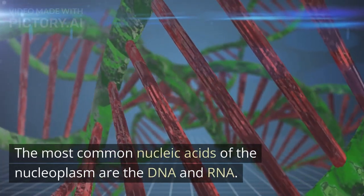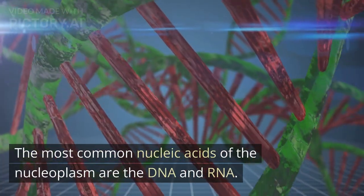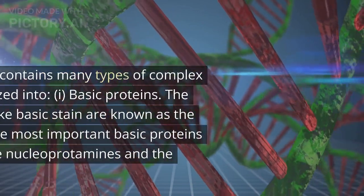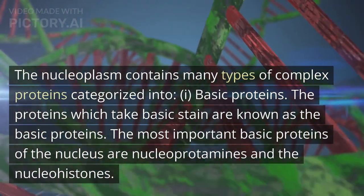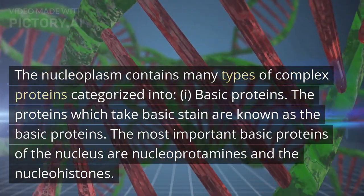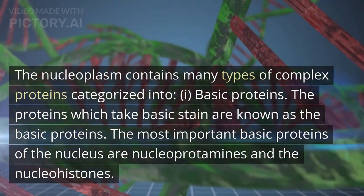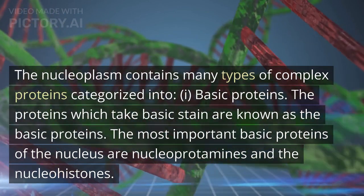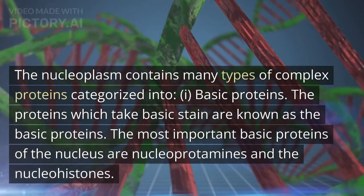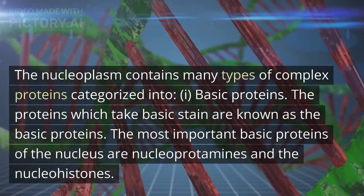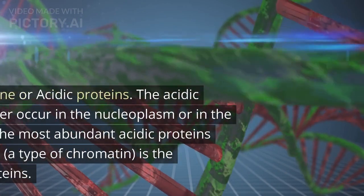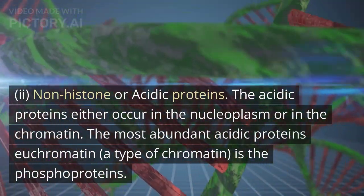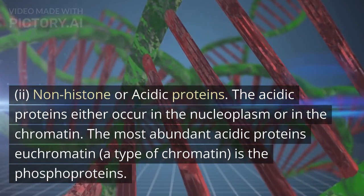The most common nucleic acids of the nucleoplasm are DNA and RNA. The nucleoplasm contains many types of complex proteins categorized into basic proteins — proteins which take basic stain are known as the basic proteins. The most important basic proteins of the nucleus are nucleoprotamines and the nucleohistones.